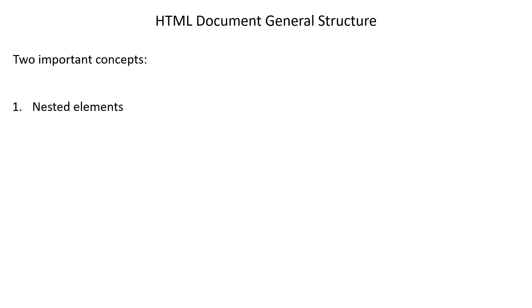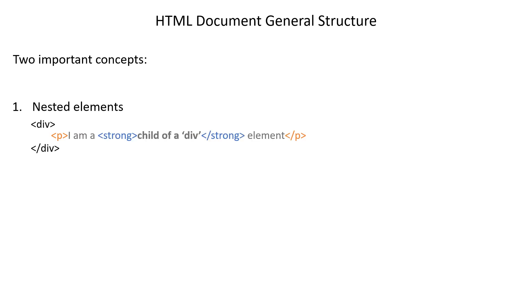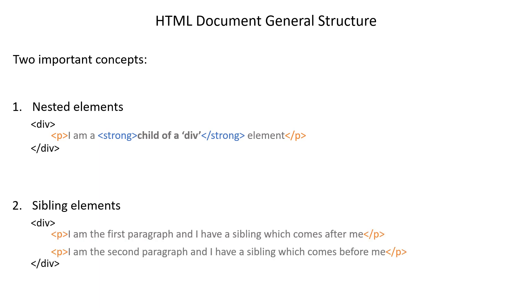Before we start, we need to take note of two important concepts about elements in an HTML document. The first concept is nested elements - an element in an HTML document can have another element inside it, called a nested element or child element, which can in turn also have a nested element inside of it. The second concept is sibling elements - two or more elements can share the same parent element, making them sibling elements.